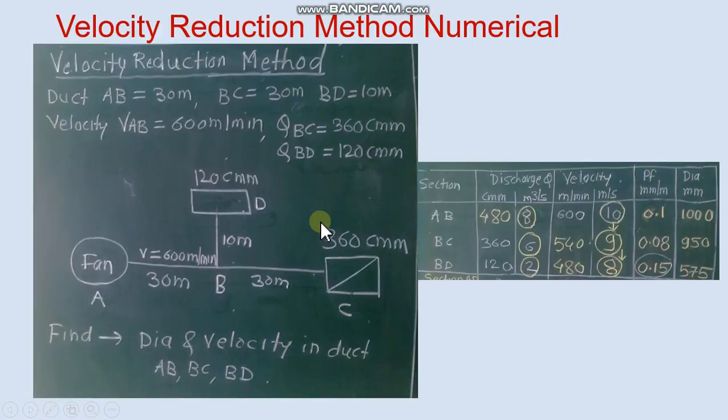Now in second section we assume velocity in decreasing manner. So in second section we assume velocity 9 and third section we assume velocity 8. So we obtain for the value of this velocity and corresponding discharge PF and diameter. Similarly we obtain for this velocity and discharge PF and diameter from friction chart.